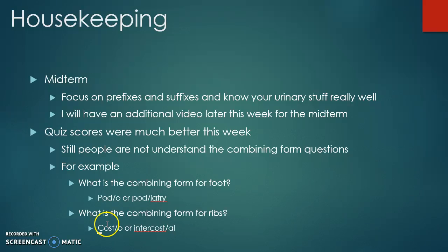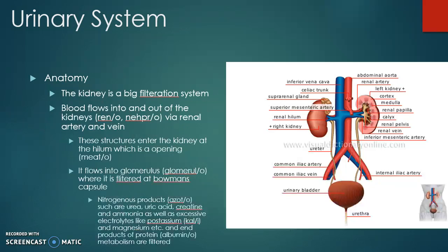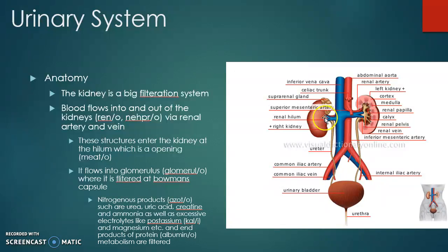The urinary system is all about filtration. Blood flows into and out of the urinary system via renal arteries and veins, and these structures pass into the kidney at what's called the renal hilum — this is an opening. The combining form for opening is hiat/o. Structures come in and out of the renal hilum right here.